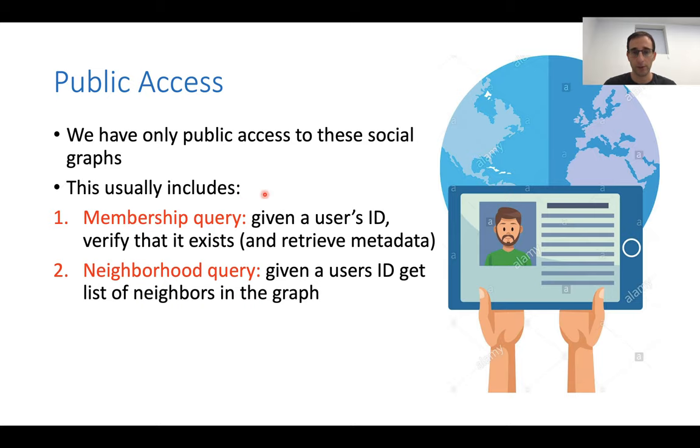The first is membership queries. So this means that I'm given a user's ID from some huge universe of possible IDs, and I can check if this ID exists or not in the network. And usually if it exists, I also get some metadata, some profile page of the user containing some information about this user age and other stuff. The second kind of query is the neighborhood query where again, I provide the ID of a user and I get the list of neighbors in the graph. And if this list is too huge, you can think of also like I provide the ID and I get the i-th neighbor.